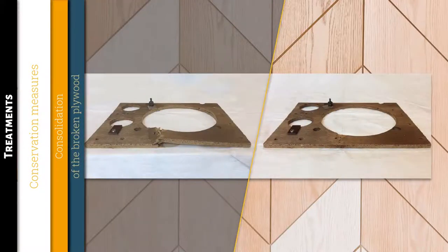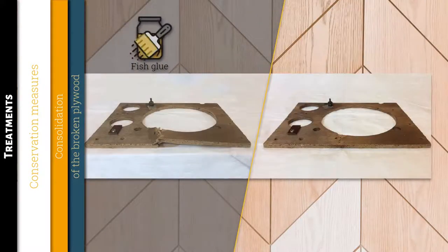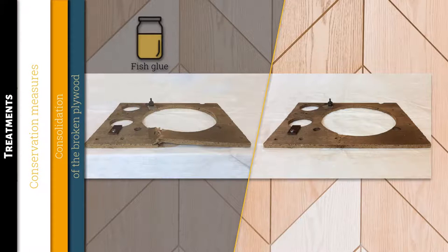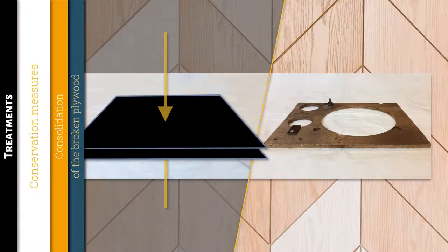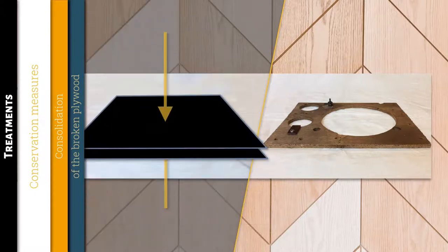For the broken plywood, to begin, the material required moisture supply with a nebulizer. I fastened breaks with fish glue and I placed it into the press. After 30 minutes, I cleaned it and I put back everything into the press.